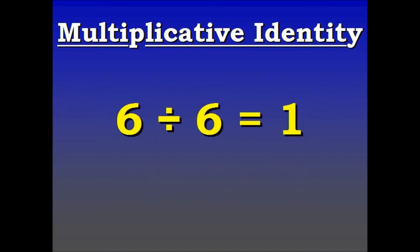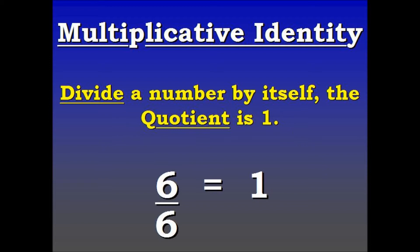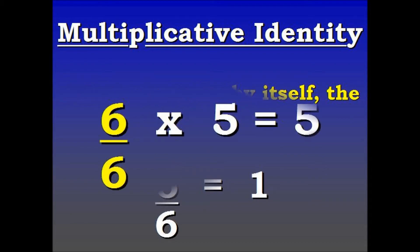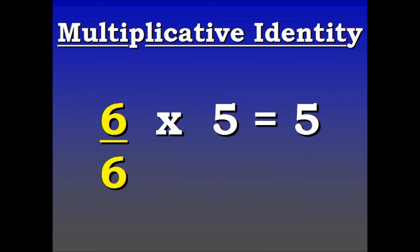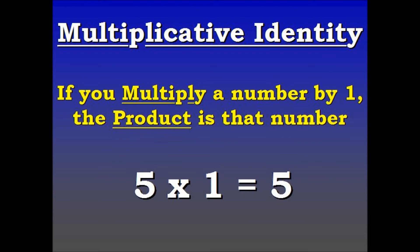One quick point to make: 6 divided by 6 equals 1, and you can also see it as 6 over 6, which equals 1. As shown in our example, the 6 over 6 can also be seen as simply the number 1, which goes back to our original multiplicative identity — if you multiply a number by 1, the product is that number. You will use all the definitions in this video to solve algebraic expressions in the future.